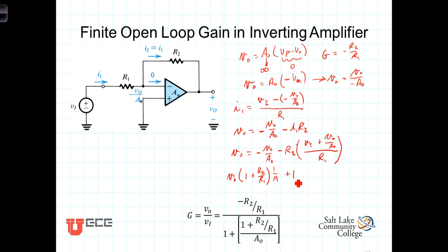We then can write V0 times 1 plus R2 over R1 times 1 over A plus 1 is equal to negative R2 over R1 times VN. And V0 is timesing this whole side.